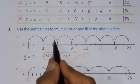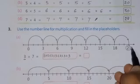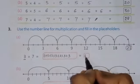1, 2, 3, 4, 5, 6, 7. And, the answer is 21. We have to write down in this box.